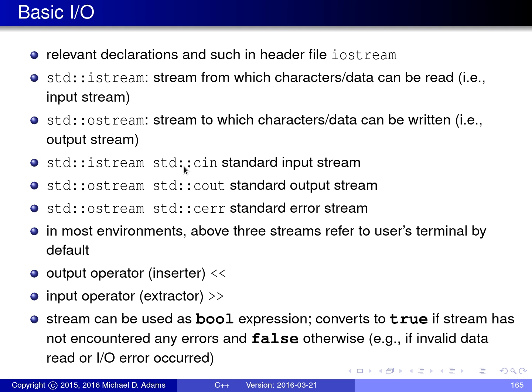There are three interesting streams that are set up for you automatically by the standard library. One is called cin, one is called cout, and one is called cerr. cin is the standard input stream — the place that normally your program would read input from. cout is the standard output stream, where your program would normally send output. cerr is the standard error stream, typically where error messages would be sent if something goes wrong.